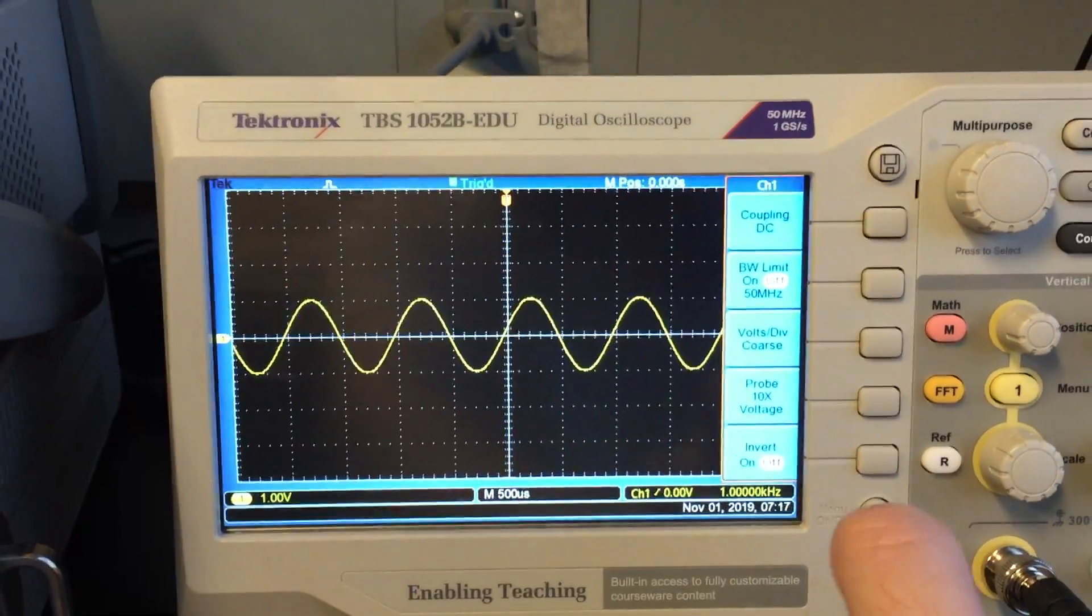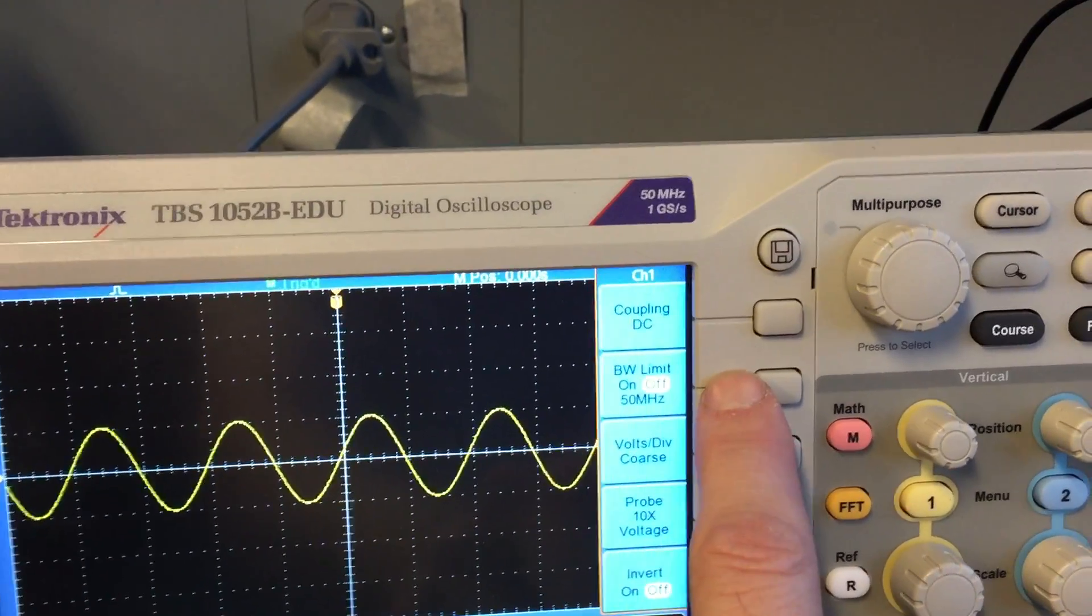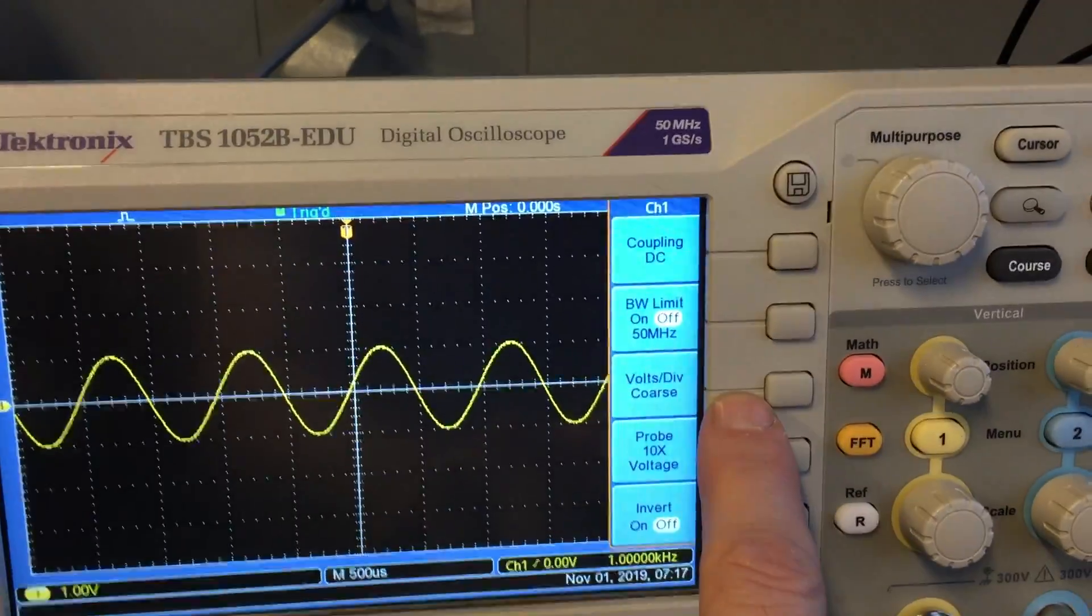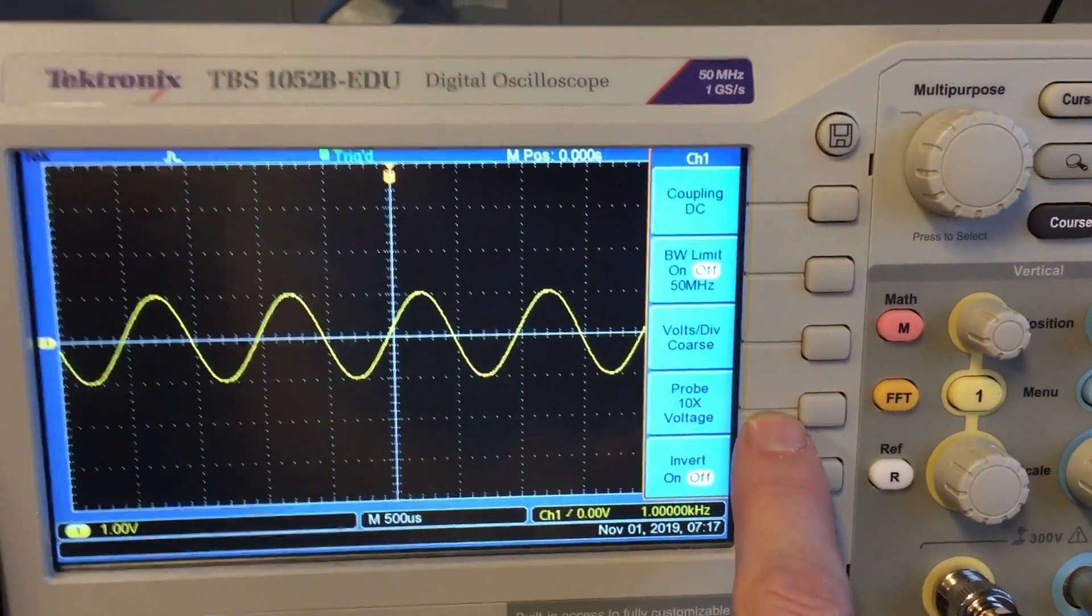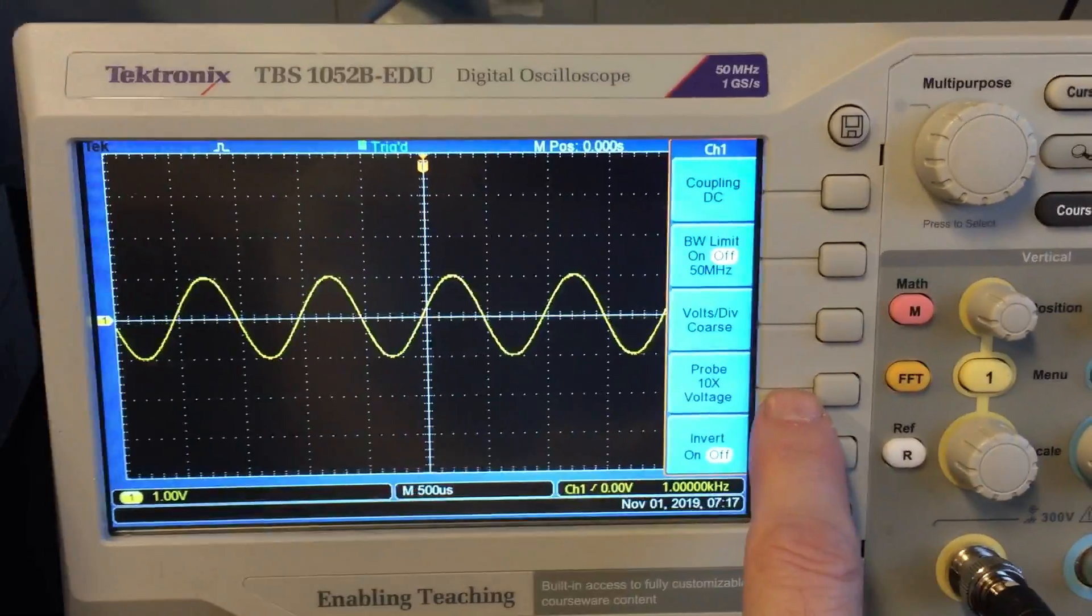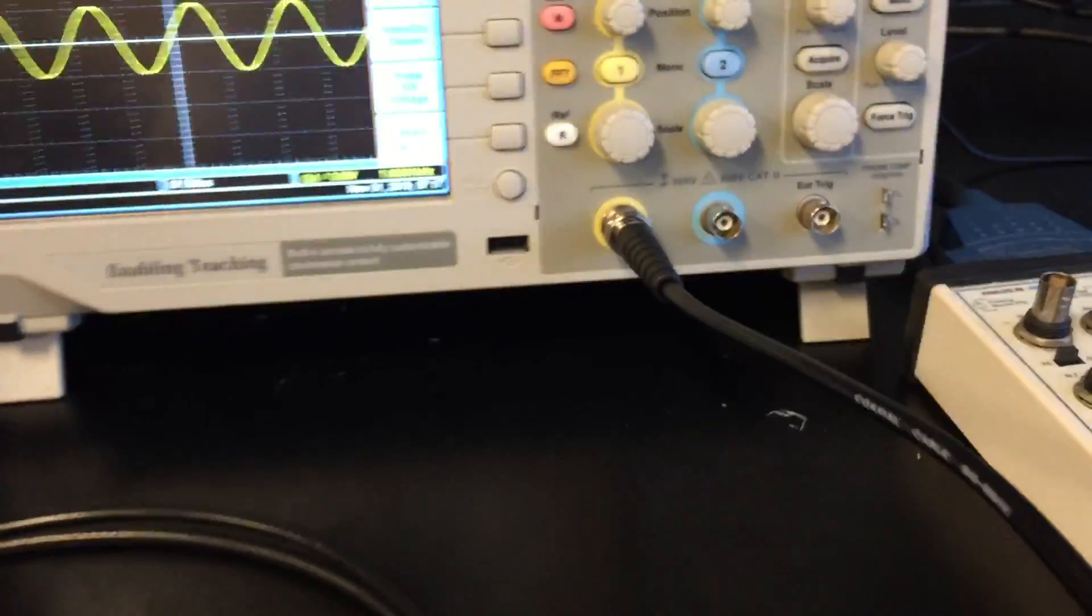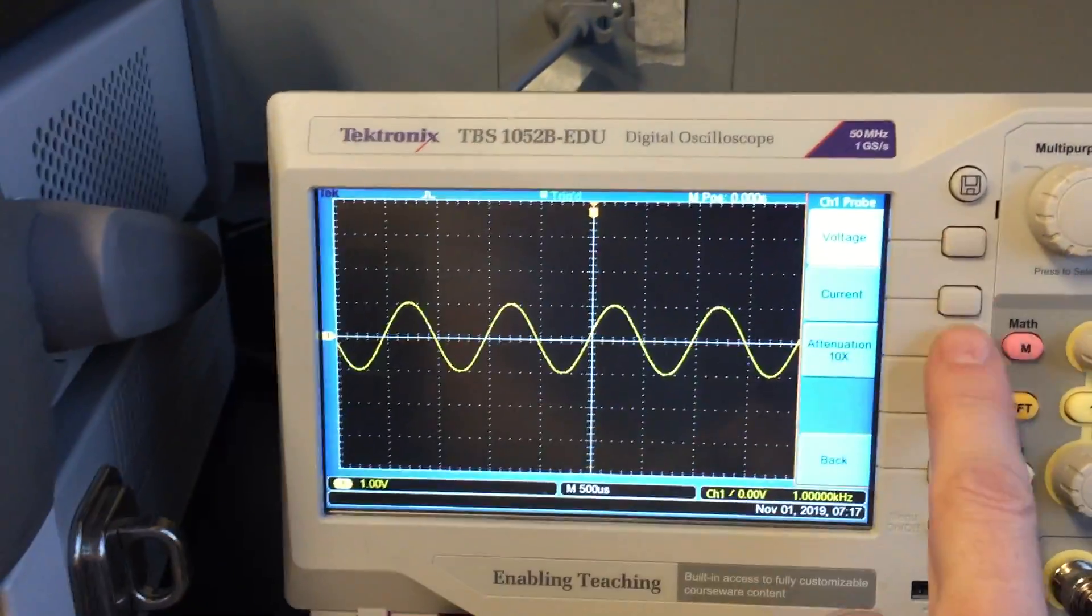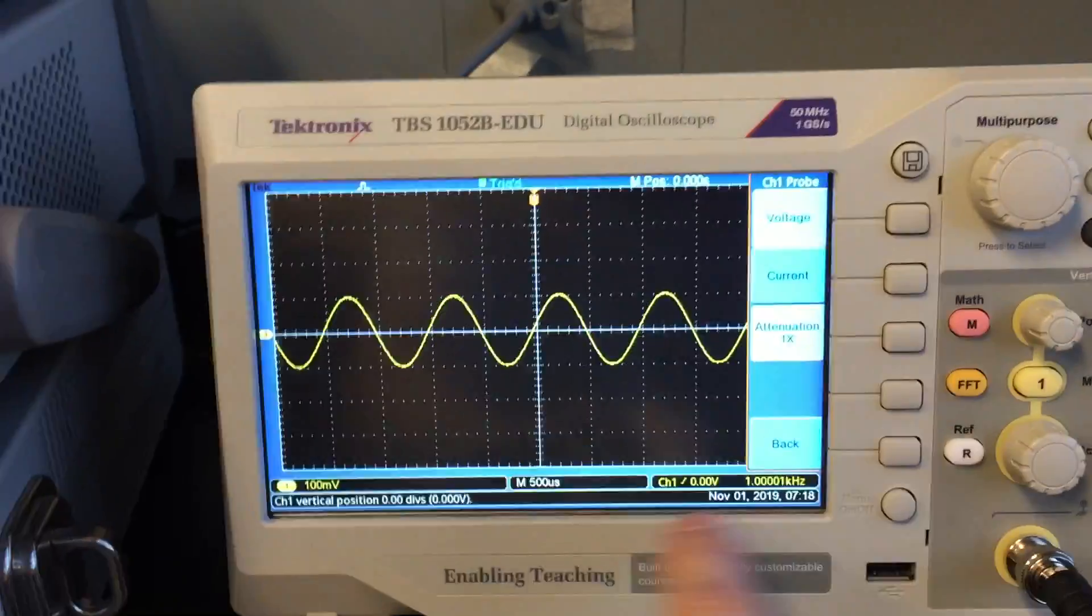So now I can adjust some of my settings. So I'm DC coupled because I'm going to be looking at signals with DC component. Bandwidth limit is off. Volts per division is coarse. That's good. So a probe is 10x. So a 10x probe is an oscilloscope probe that is a specially designed probe to use with the scope. So we don't use that in this lab. These BNC cables right here are 1x. So you always want to set that to be a voltage probe that has an attenuation of 1x right there.